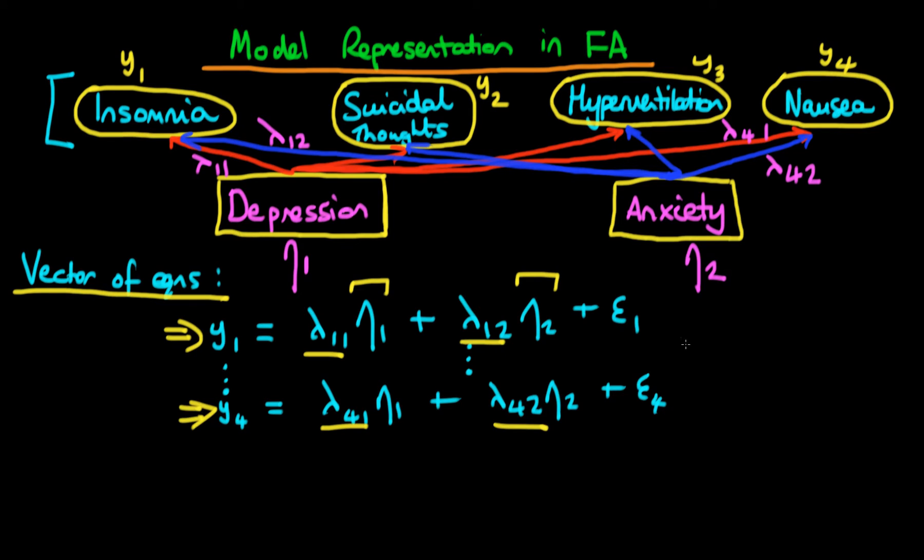So it's just important to stress that eta 1 here actually represents a vector which has different values for each different individual in our sample. So we have sort of eta 1 1 through to eta 1 n and we could write down a similar sort of vector for eta 2.